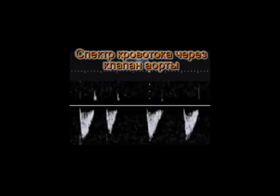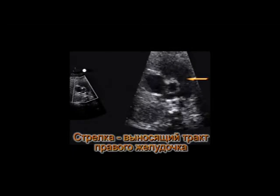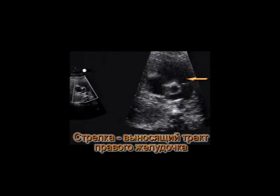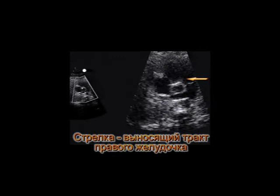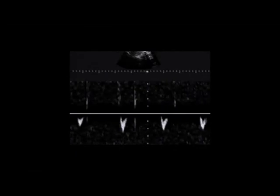В выносящем тракте левого желудочка был зарегистрирован нормальный спектр кровотока. В выносящем тракте правого желудочка был зарегистрирован низкоамплитудный кровоток со значительным снижением интеграла линейной скорости, что говорит о снижении сократительной функции правого желудочка.